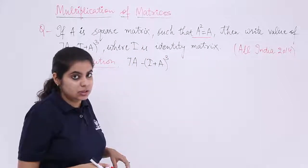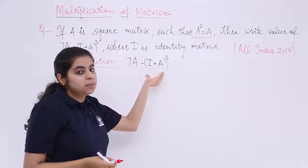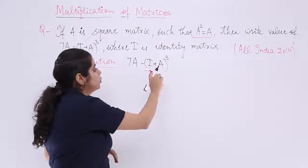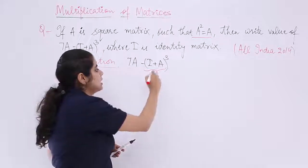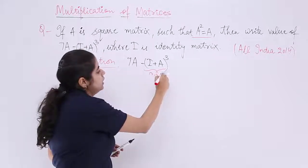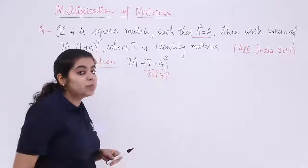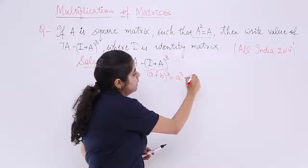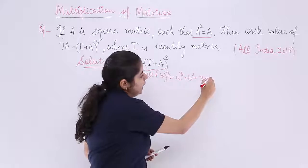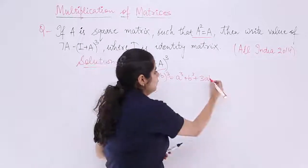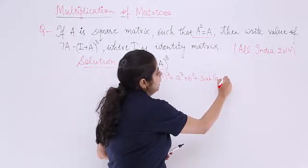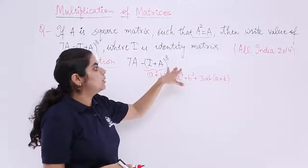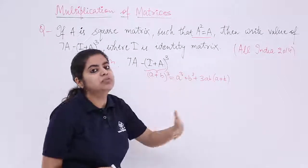Now, this expression has a whole cube, which can be treated as (A + B)³. The formula for (A + B)³ is A³ + B³ + 3AB(A + B). If we use this formula, we can simplify the given expression and solve it further.